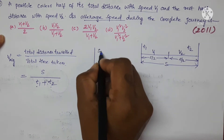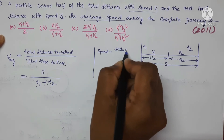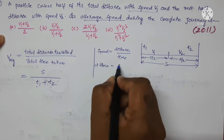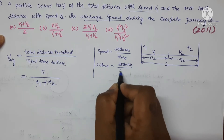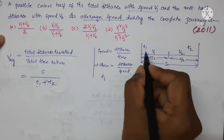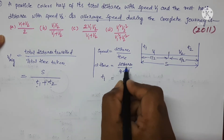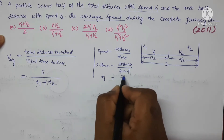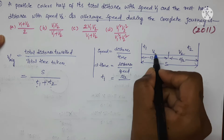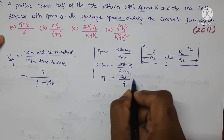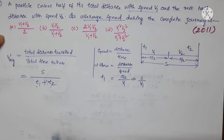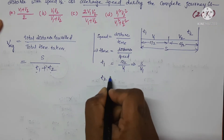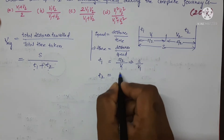We know the formula for speed: speed is equal to distance upon time. From this, time is equal to distance upon speed. For the first half of the distance, time t1 is equal to the distance s/2 upon speed v1, which gives t1 = s/(2v1). This is the time taken for the first half of the distance.